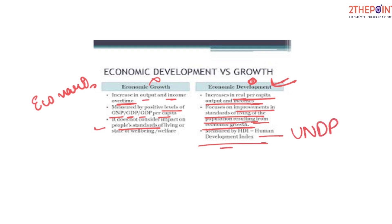The Human Development Index is published by UNDP — the United Nations Development Programme — which has certain parameters to assess quality of life in every country. Based on those parameters they publish the index and rank the countries. This is how we measure development, which is a qualitative factor. These two terms, often used interchangeably, have their own distinct meanings. Development is a broader concept than growth, which only looks at quantifiable data and does not focus on the larger picture of people's quality of life.